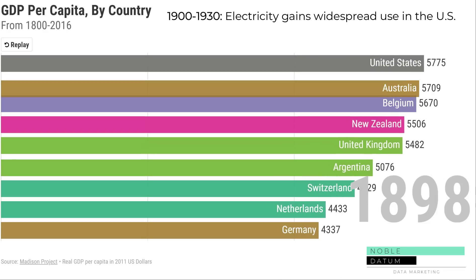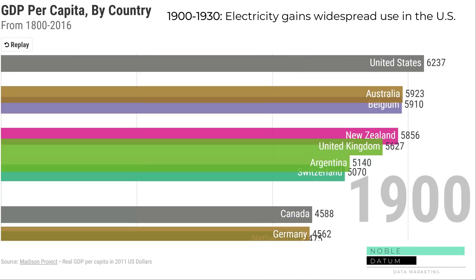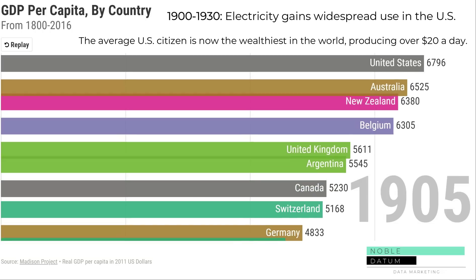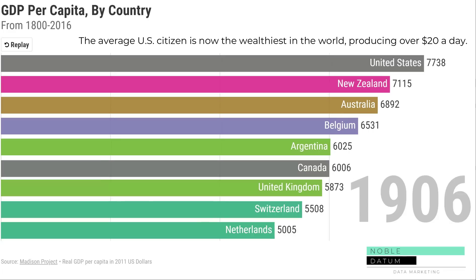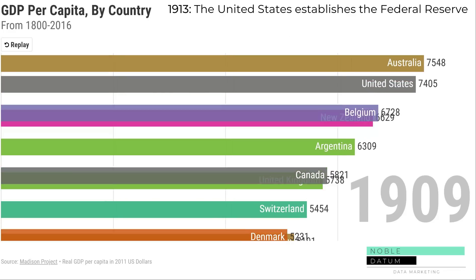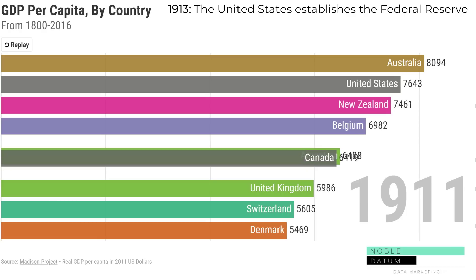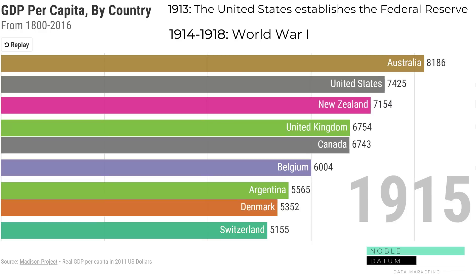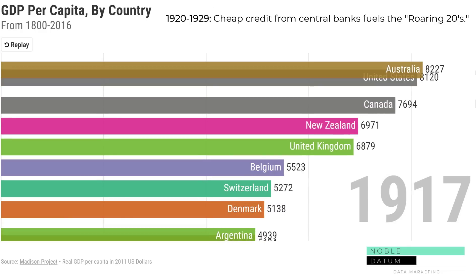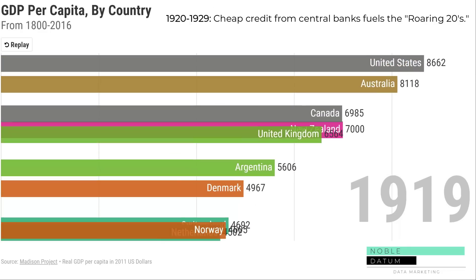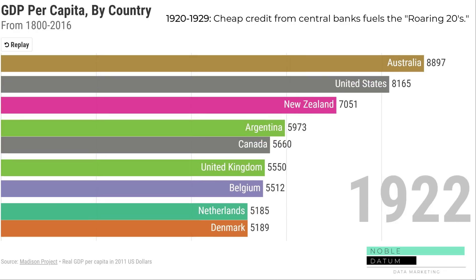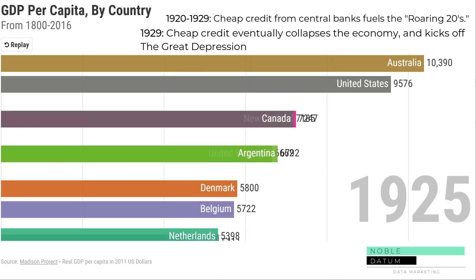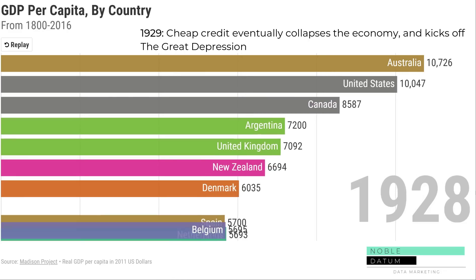From 1900 to 1930 the US sees widespread adoption of electricity. In 1913 the United States establishes the Federal Reserve. And in 1914, the world descends into the First World War. Cheap credit from central banks fuels the economic boom known as the Roaring Twenties. Cheap credit eventually collapses the economy, and in 1929, the world enters the Great Depression.